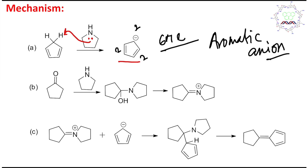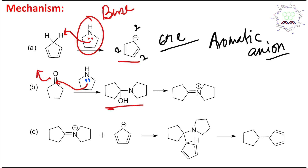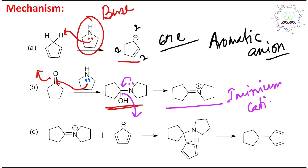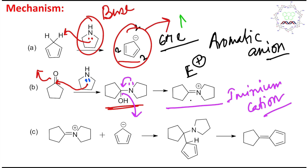So that is the first step — the acid-base reaction. In the next step, pyrrolidine acts as a secondary amine to produce an imine. The lone pair attacks the carbonyl, it opens up, and through the first step it produces a hydroxyl group via addition. Then the OH leaves and it produces an iminium cation. This iminium cation is the electrophile, and the cyclopentadienyl anion is the nucleophile.